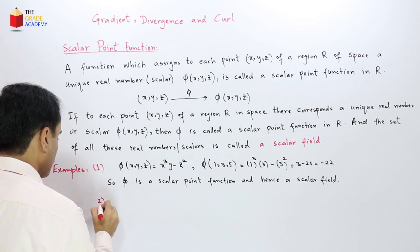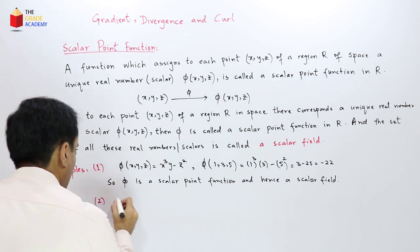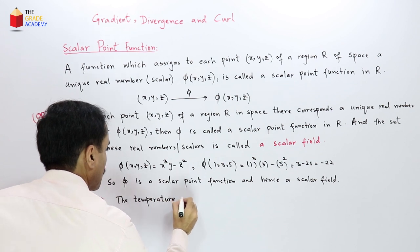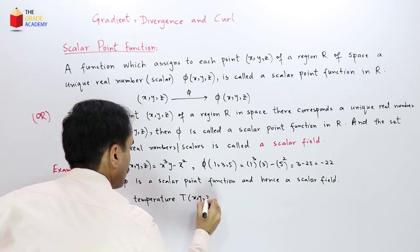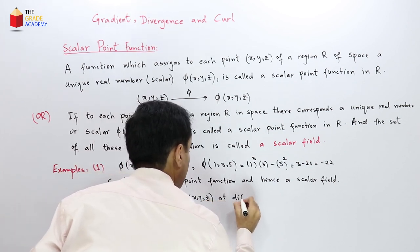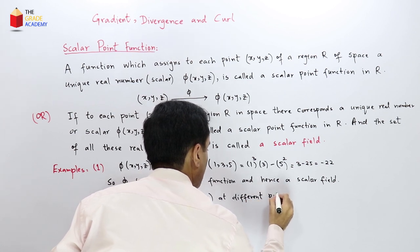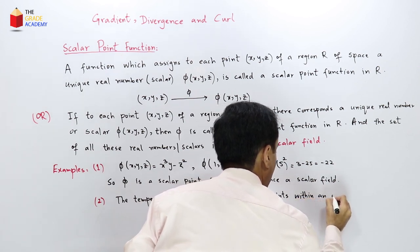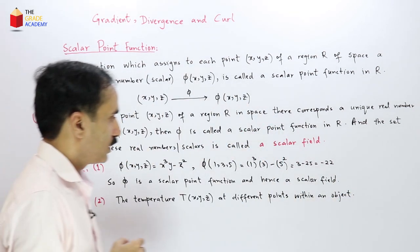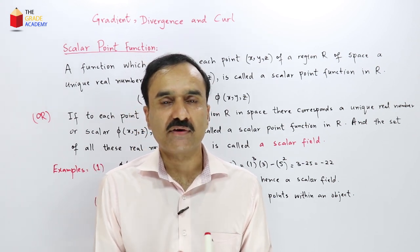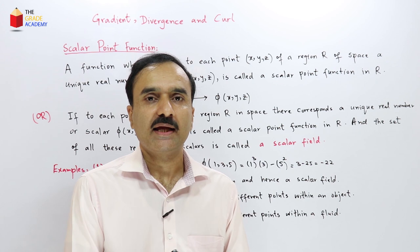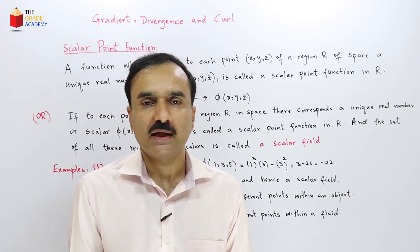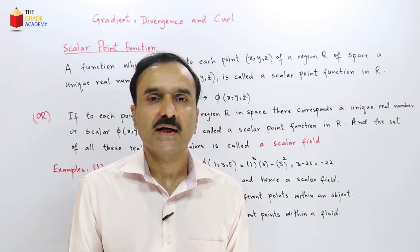Now let us have another example of scalar field. The temperature T at different points within an object is an example of a scalar field. Similarly, if we consider an object as a region of space, then at each point within that object there will correspond a unique density. So density will also be an example of a scalar point function and hence a scalar field.